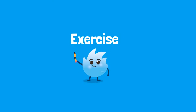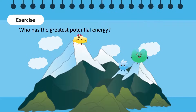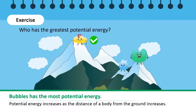Time for an exercise. Who has the greatest potential energy? Bubbles has the most potential energy because she is at the top. We know that potential energy increases with the increase in the distance of a body from the ground.